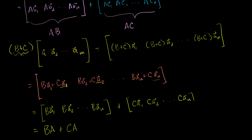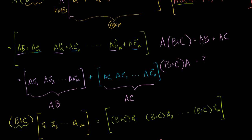So the distributive property works both ways: B plus C times A equals BA plus CA, and A times B plus C equals AB plus AC. The one thing to be careful of is that these two expressions are not equivalent to each other. When dealing with matrices, it's very important to keep your order. So BA plus CA is not the same as AB plus AC — you can't switch the order of the products, because matrix products are not commutative. But we've shown that the distributive property works both ways.